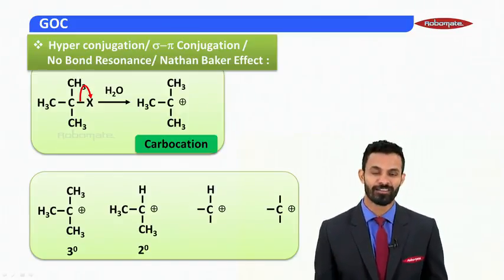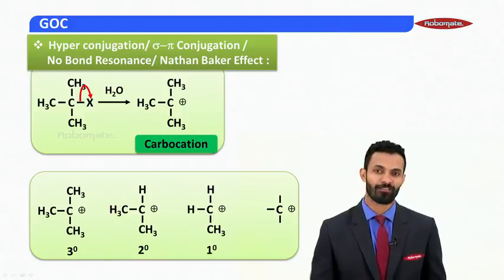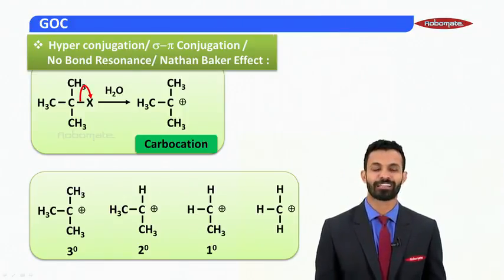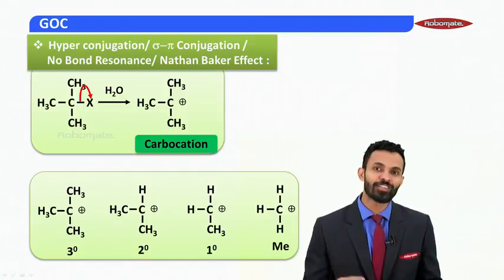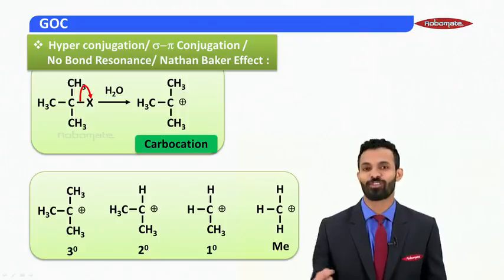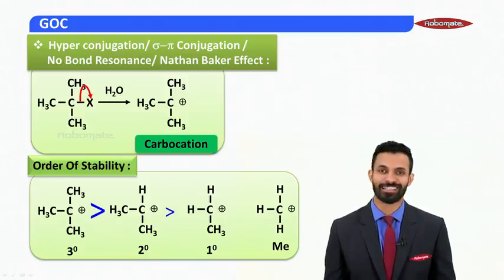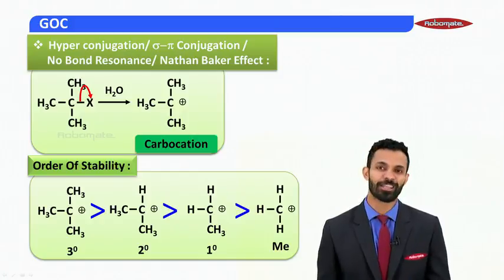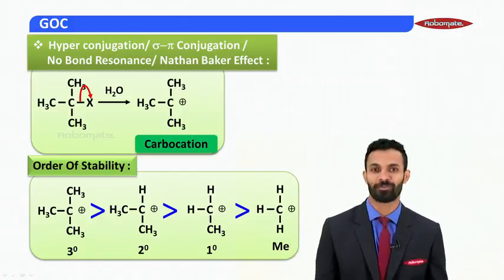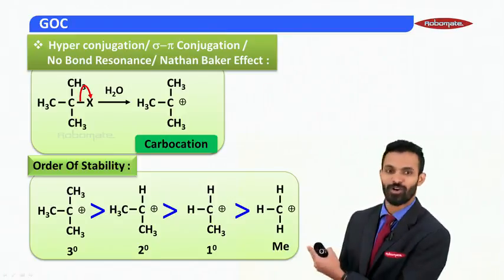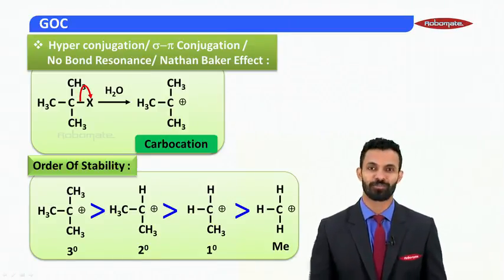If two valences are fulfilled with H and one with methyl, the cationic carbon is primary. If all valences are fulfilled with H, it is called a methyl carbocation. The nature of the carbon carrying the positive charge decides the nature of the carbocation. The order of stability is: tertiary > secondary > primary > methyl (least stable). This order will be proven by the phenomenon of hyperconjugation in the next module.